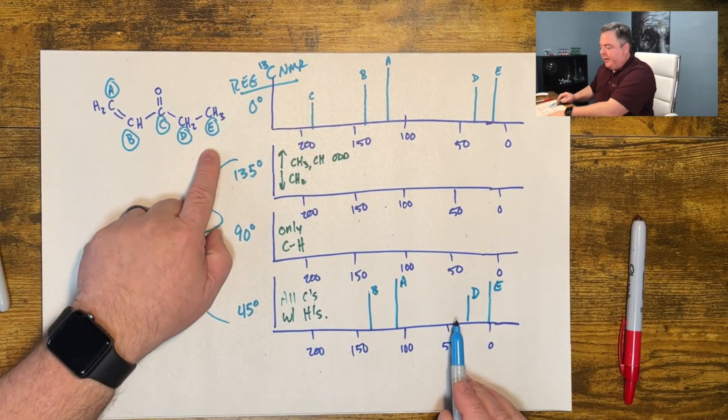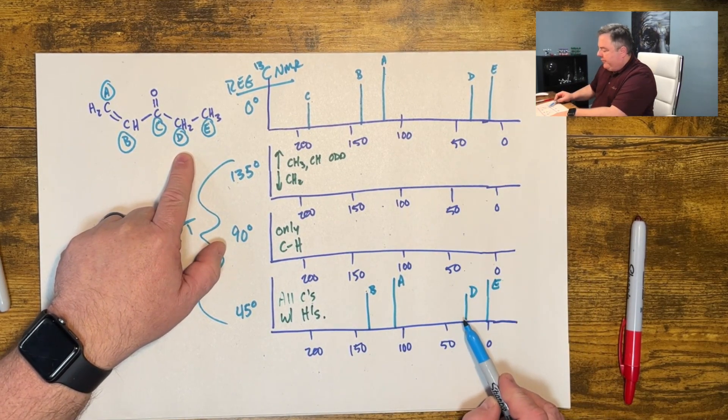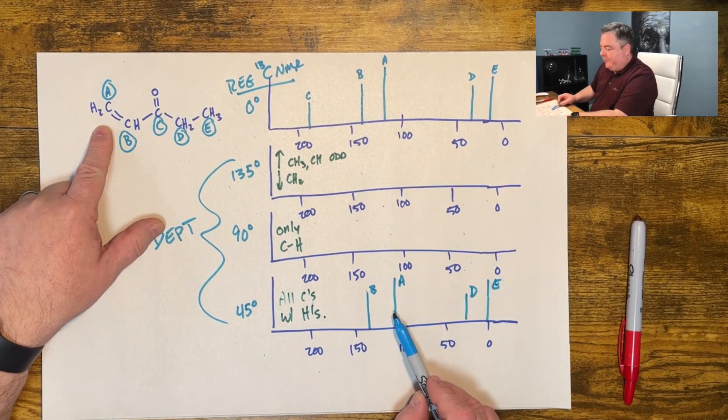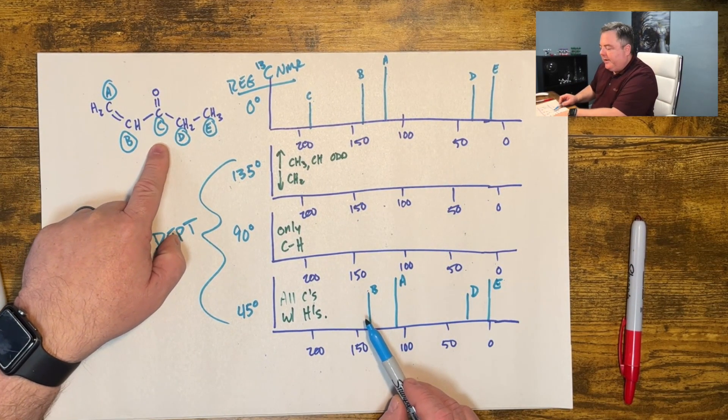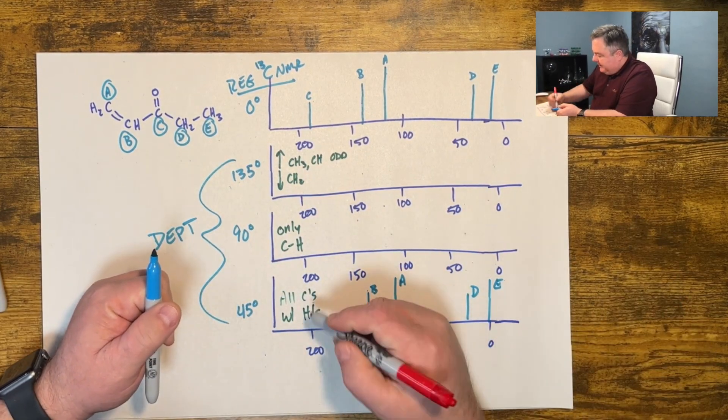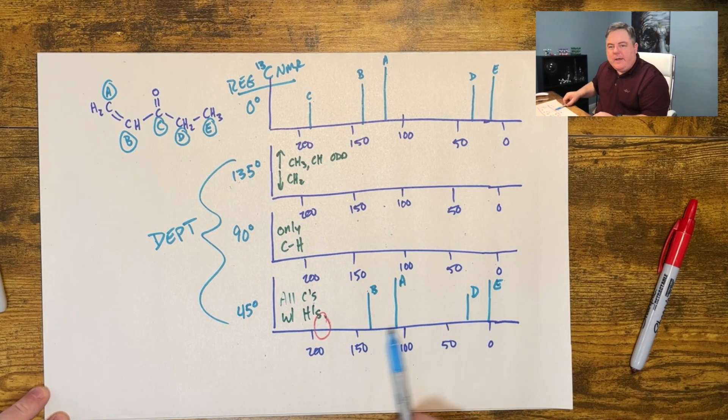So E shows up again, D shows up. So E CH3 has hydrogens, D CH2 has hydrogens, A CH2 has hydrogens, B CH has hydrogens. C carbonyl with no hydrogens does not show up.